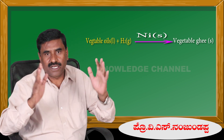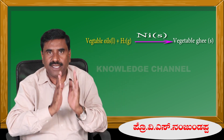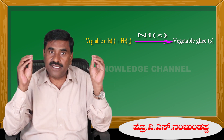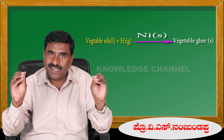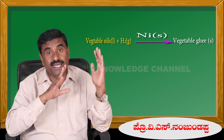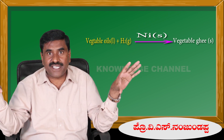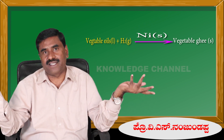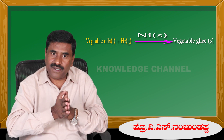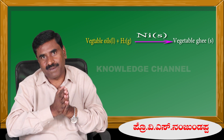In conclusion: homogeneous catalysis is a catalytic reaction in which the reactants and catalyst are in the same physical state. Heterogeneous catalysis is a catalytic reaction in which the reactants and catalyst are in different physical states. The continuation of this chapter will be covered in the next video. Till that time, bye bye.